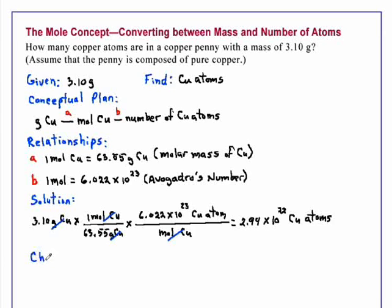Let's check our answer to make sure that it makes sense. We have 3.10 grams of copper, which is smaller than the molar mass. Therefore, we should have less than Avogadro's number. And indeed we do. Avogadro's number is 10 to the 23rd. We have a number 10 to the 22nd. And so, this answer seems to be correct.